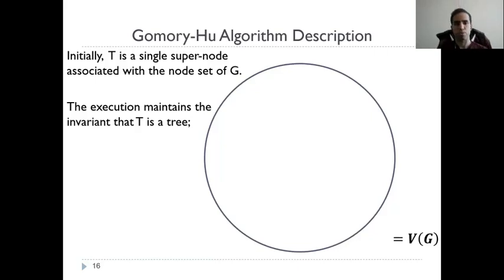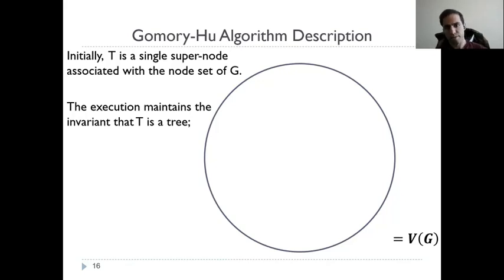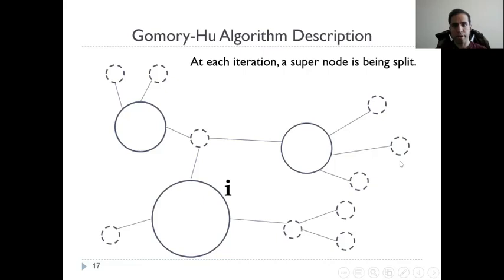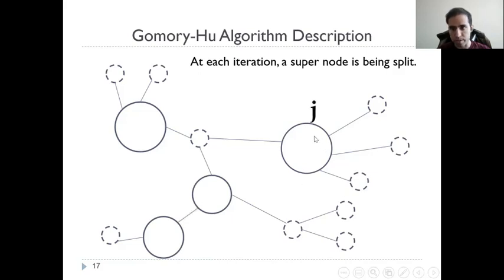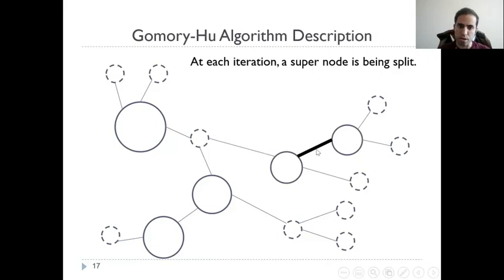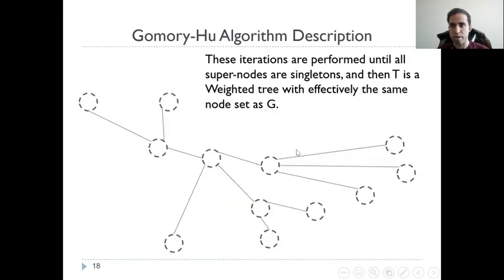In order to understand this, let me talk about the Gomory-Hu algorithm. Initially, T is a single super node associated with the entire node set of the graph, and this invariant is maintained throughout the execution. At each iteration, two processes happen simultaneously. A super node i is picked and split into two, with a new edge between the two parts, and edges previously connected to i are reconnected to either one side or the other. We continue picking non-singleton super nodes and splitting them until all super nodes are singletons, effectively producing a weighted tree on the same node set.